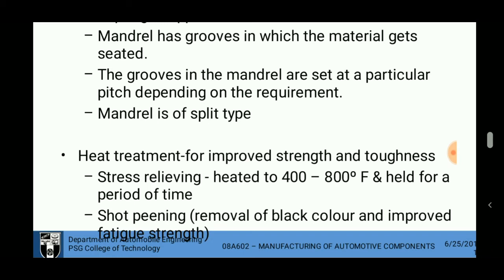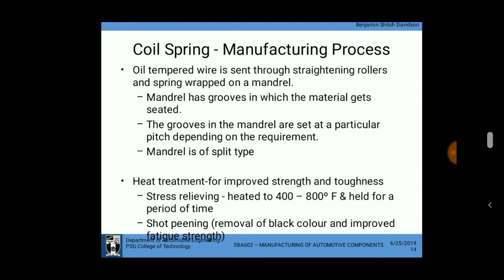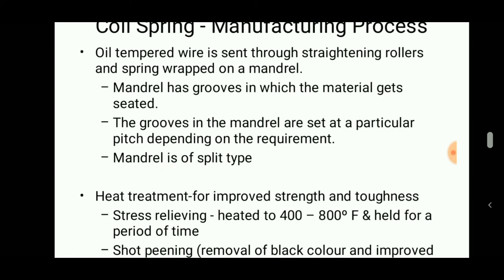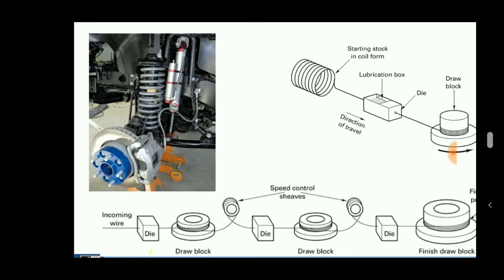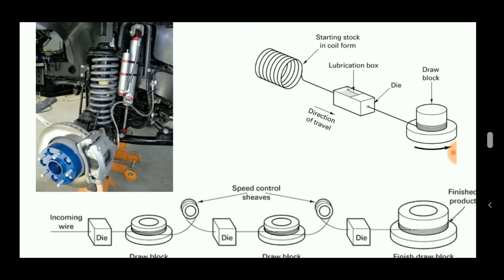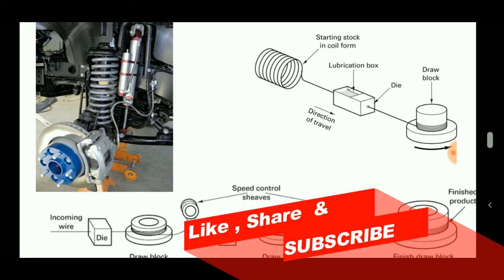And shot peening - there is a removal of black color and improved fatigue strength process. So these are all the processes that are made in the production or manufacturing of this coil spring.